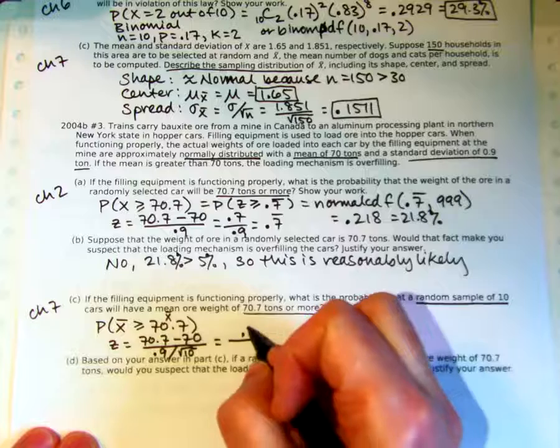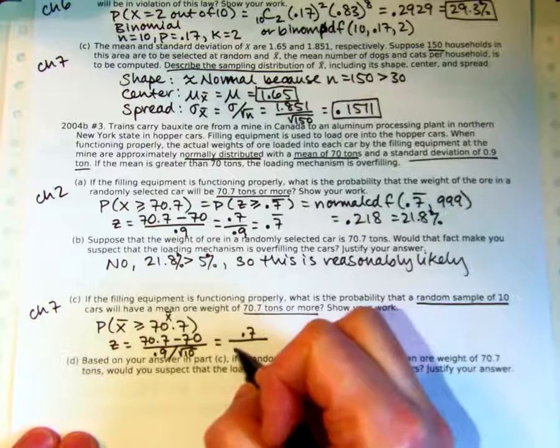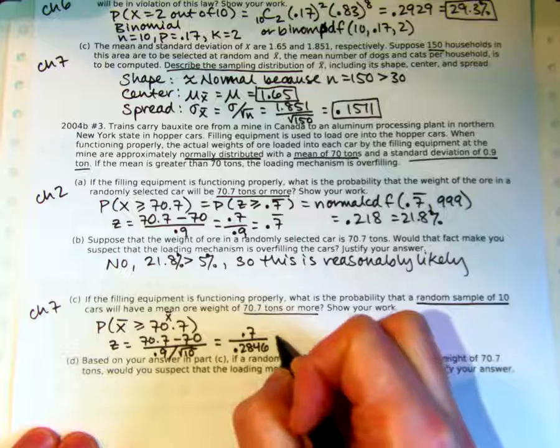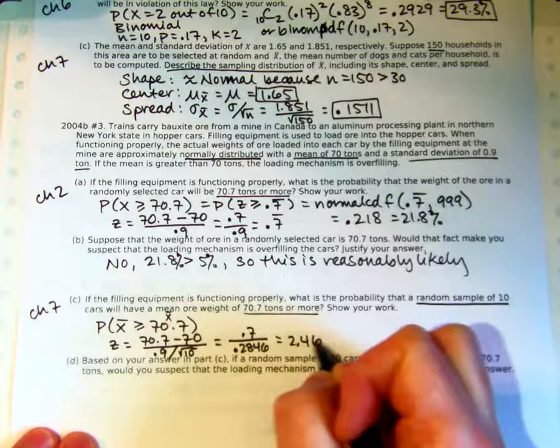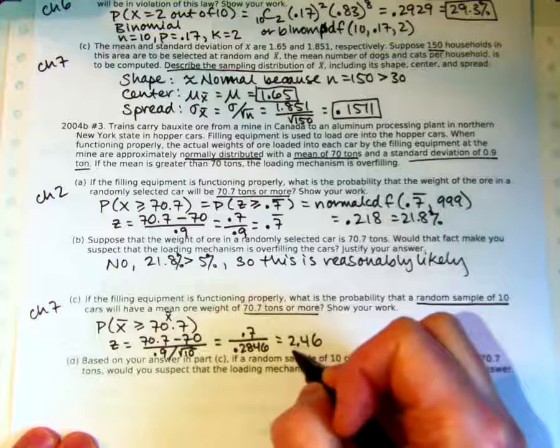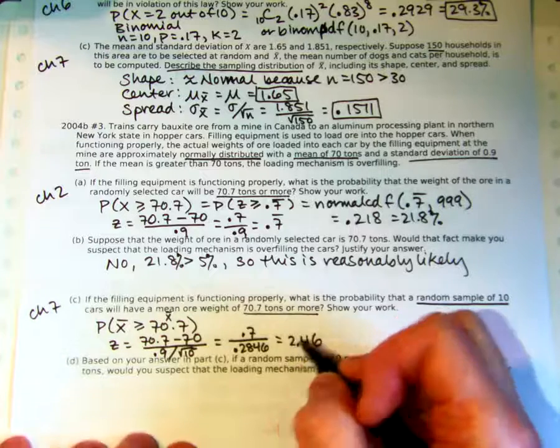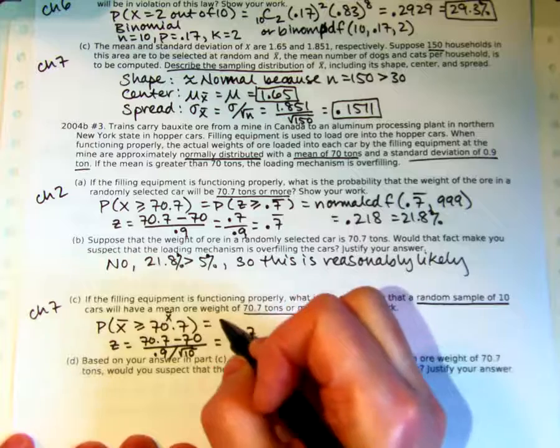I still have 0.7 on the top. When I did the bottom, I got 0.2846. Divide them and I get a z-score of 2.46. That's kind of a clue right there. Already bigger than two standard deviations away from the mean. So that's going to change my probability quite a bit.